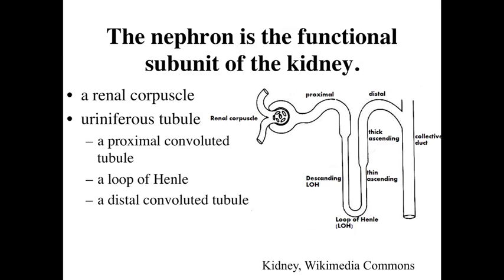The distal convoluted tubule - convoluted for twisted, distal because the materials within it have traveled through a long series throughout the tubule system - may twist around and come into very close anatomical proximity with the renal corpuscle itself. So it's close anatomically, but distant in terms of the distance the urine has flowed while being processed. Ultimately, this distal convoluted tubule dumps into the collecting tubules and collecting ducts that are part of the medullary rays discussed in the previous lecture.